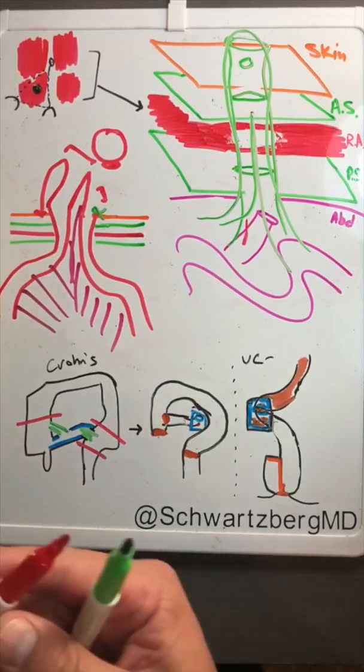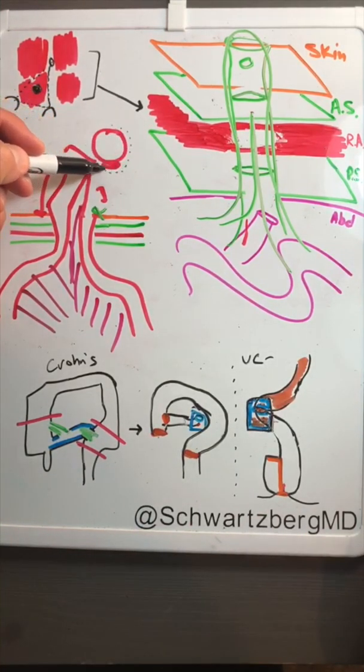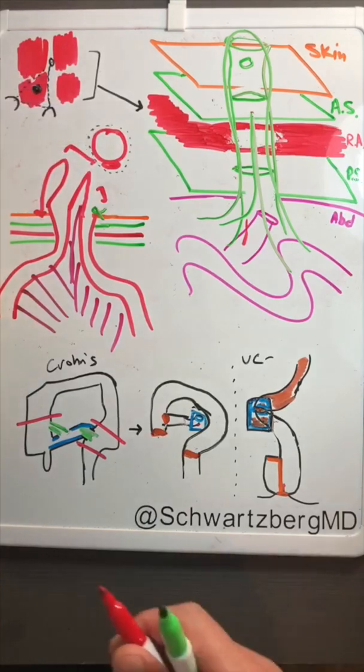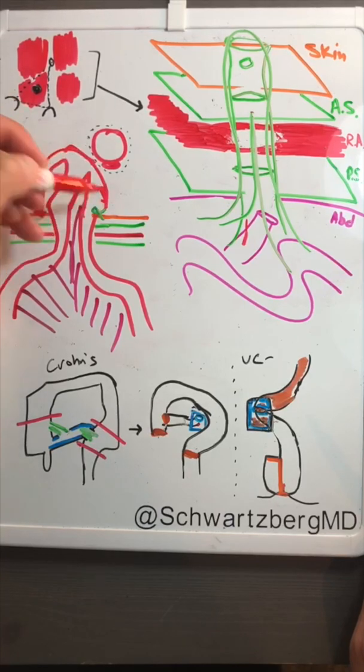But that's important because when we reverse this ileostomy, all we have to do is cut right around it. We then undo what we did and bring this loop of bowel back over.